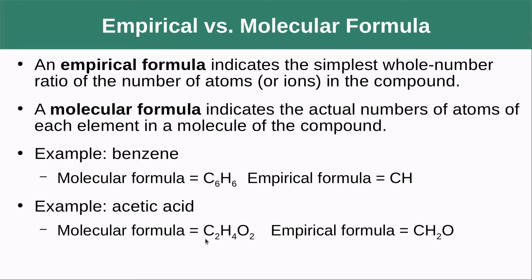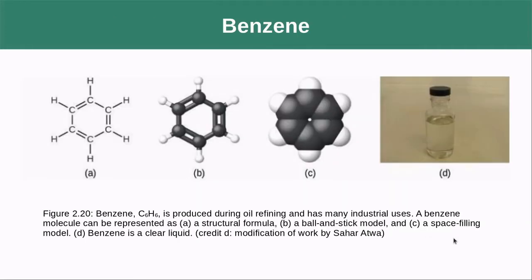Another example is acetic acid — each subscript in its molecular formula is divisible by two, so the empirical formula is CH2O. Picturing benzene's ring structure, the molecular formula lists all atoms, while the empirical formula CH represents the smallest repeating unit that is repeated as you go around the ring.